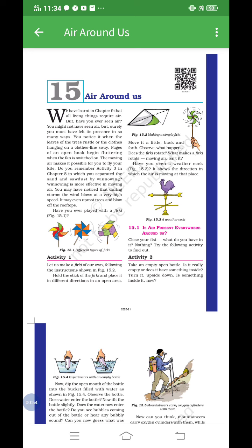You notice air when the leaves of trees rustle, or when clothes hanging on a clothesline sway. Pages of an open book begin fluttering when the fan is switched on — the role of air is there. Why are the pages of the open book fluttering? Due to the fan, which is providing air. The moving air also makes it possible for you to fly your kite. There is a presence of air in the sky, and this helps the kite to fly.